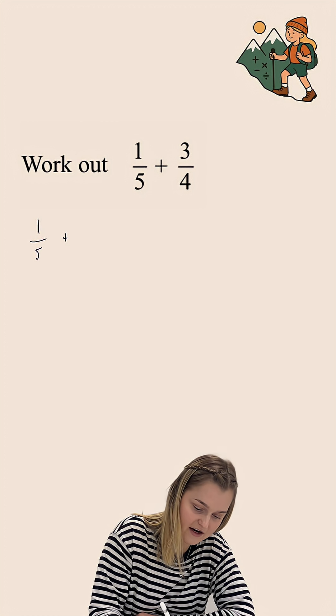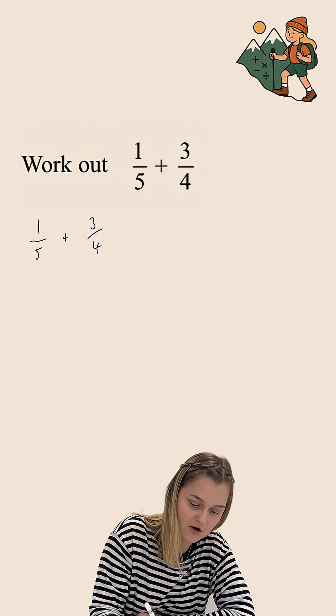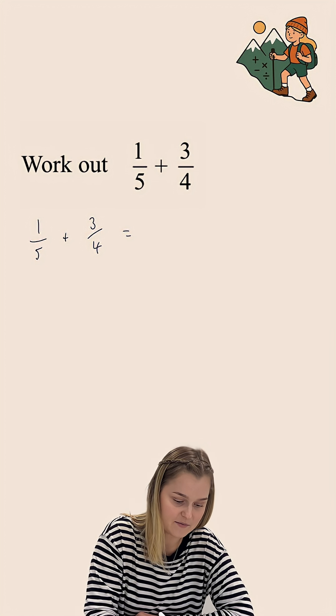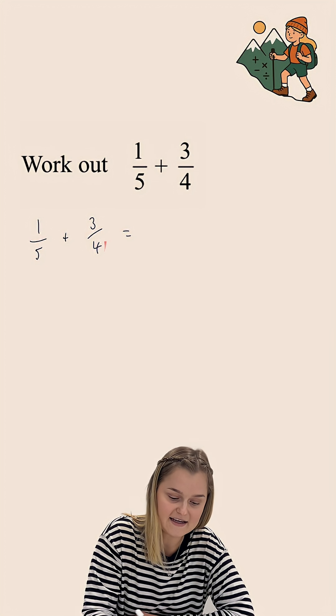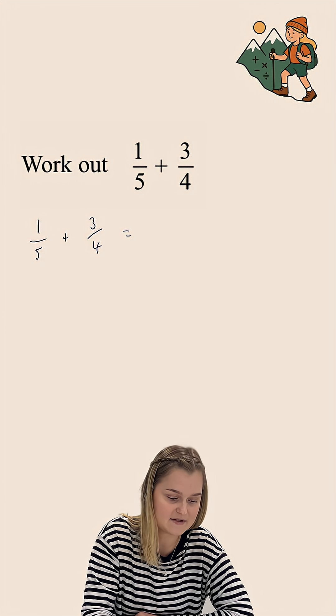Now, in order to add together two fractions, we have to have the same denominator. All that means is that the bottom number of both fractions needs to be the same before we can add them together.